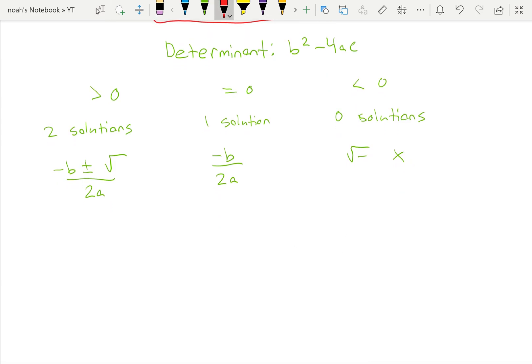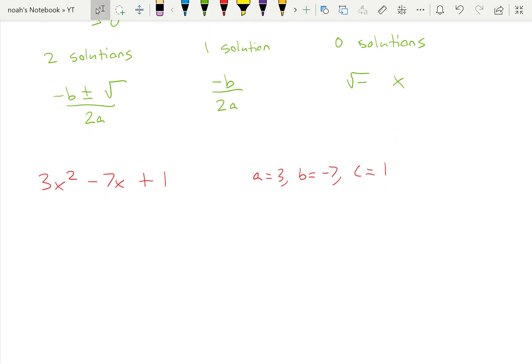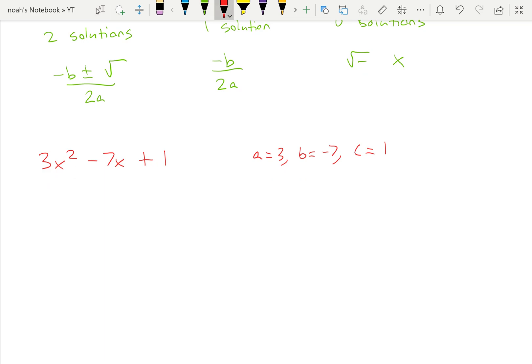Let's see an example. Say we have 3x squared minus 7x plus 1. So a equals 3, b equals negative 7, and c equals 1. Then we can plug this into the formula. So we've got x is equal to negative b plus or minus square root b squared minus 4 times a times c, all divided by 2 times a.